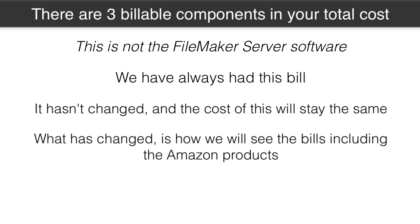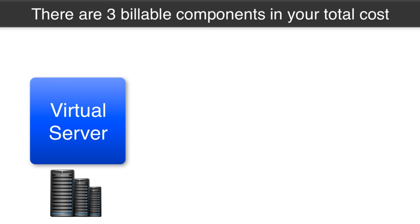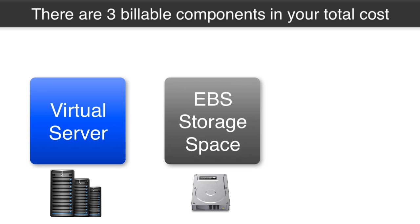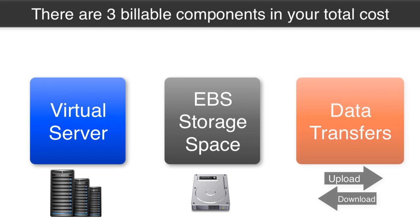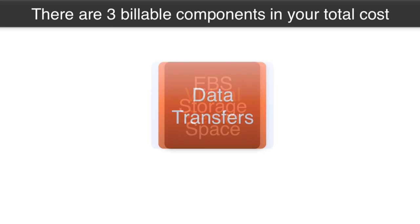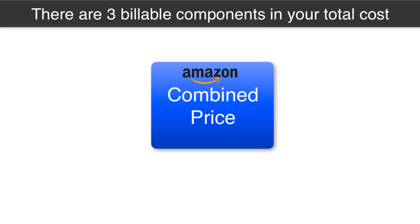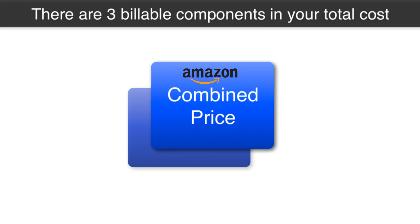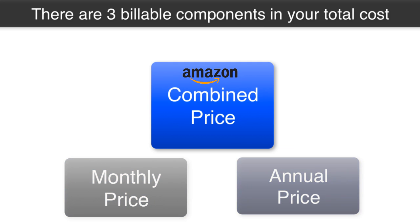Up front, let me tell you: you're going to see the cost of the virtual server, you're going to see the hard drive storage space that we burn as part of that server, and we're also going to see in a very ancillary sort of way the cost of the data that we move up and down from the server. All three of those elements combine into one price on a monthly or annual bill from Amazon.